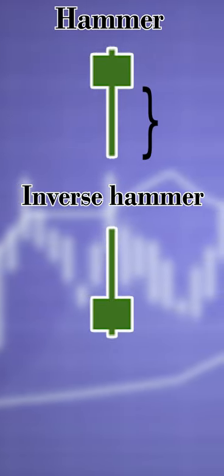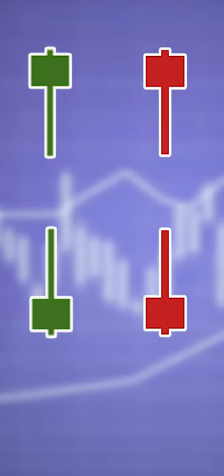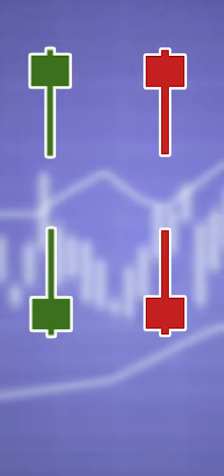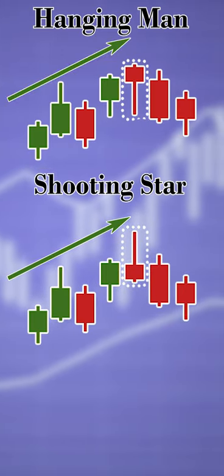Inverse hammers are the opposite with long upper shadows. The hammer and inverse hammer both have their bearish counterparts named the hanging man and the shooting star. These patterns are found at the top of an upward trend.